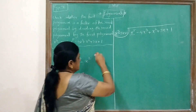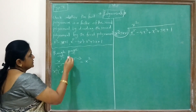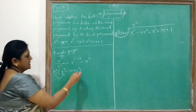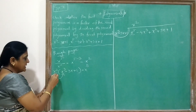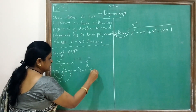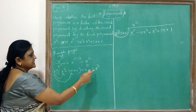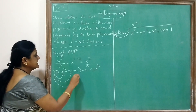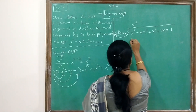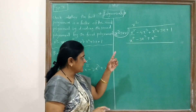You will get x². Then x² is multiplied by the divisor x³ - 3x + 1. x² multiplied by x³ gives x⁵. x² multiplied by -3x gives -3x³ (minus sign is taken so plus becomes minus). x² multiplied by 1 gives x². So you write x⁵ - 3x³ + x².